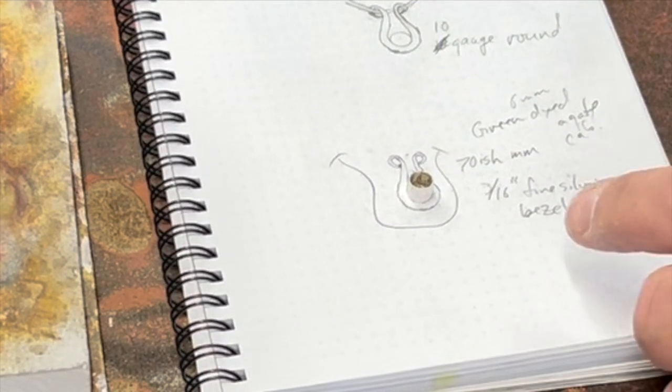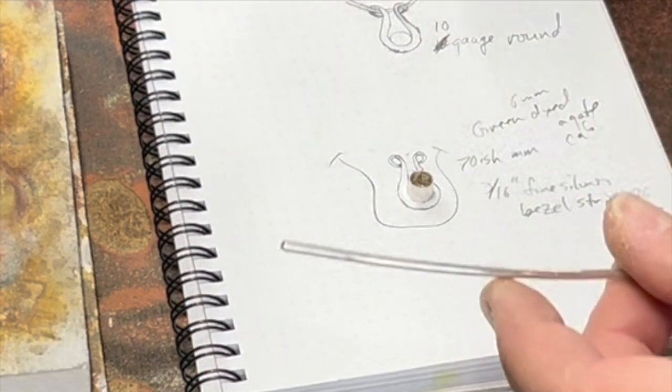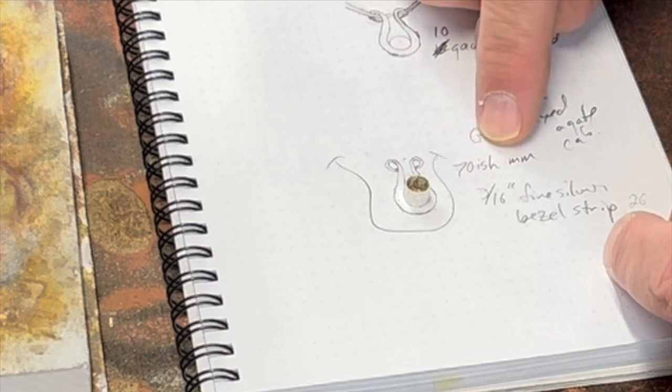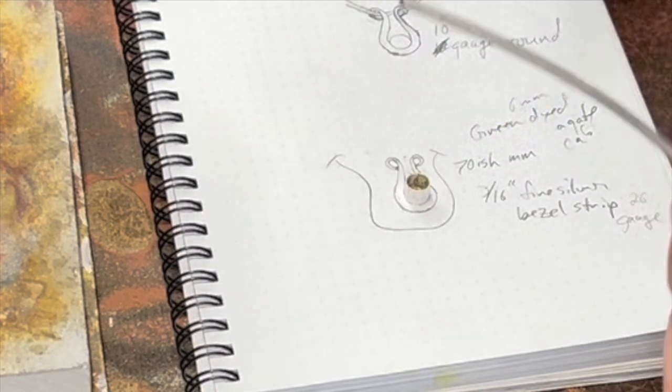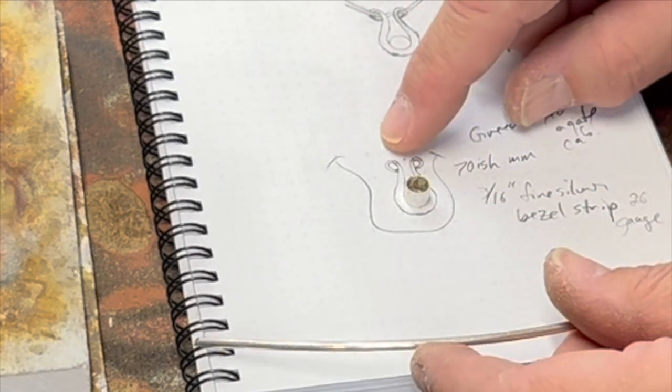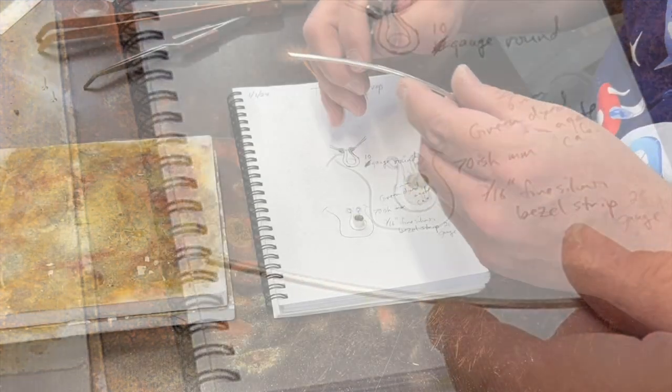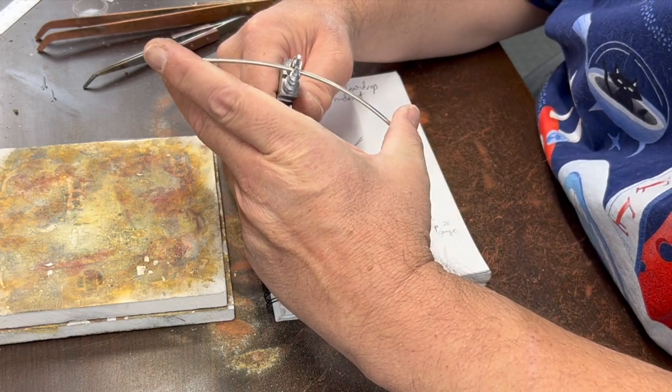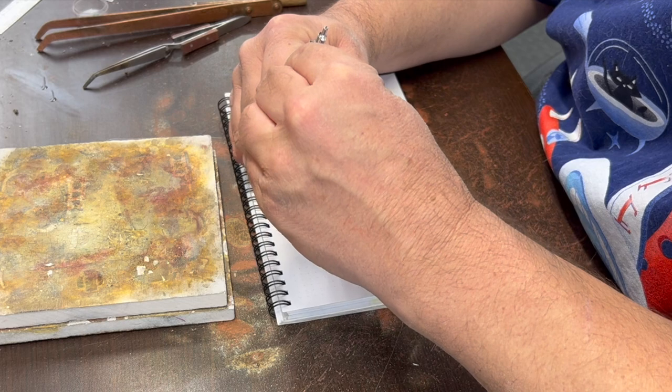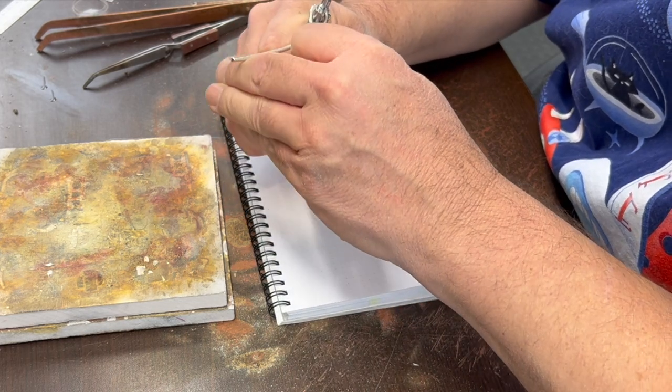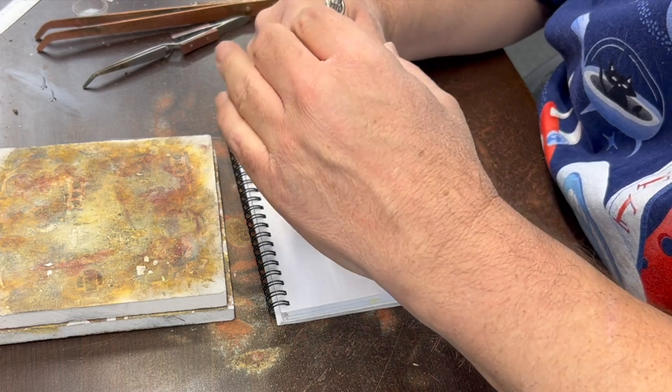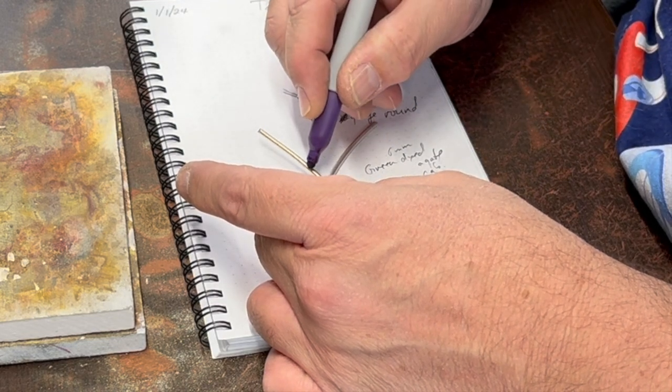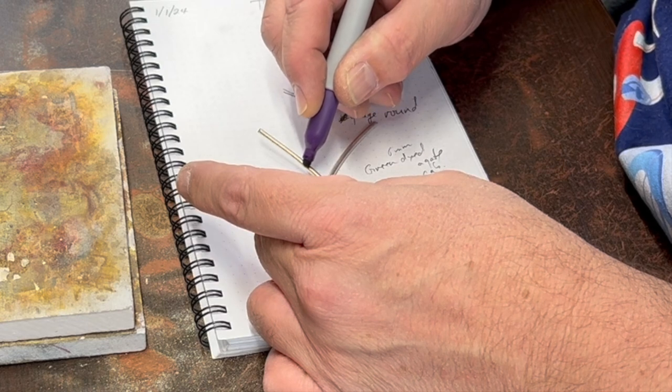So this is going to go right here. This is a 10 gauge wire. I actually measured a piece of wire that I kind of bent around there, and it came out to be about 70 millimeters. I think I might just bend this and wrap it around to see and kind of estimate that way as well. I'm going to use my little bail making pliers here to get a loop on the end.